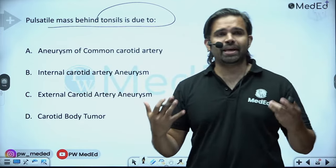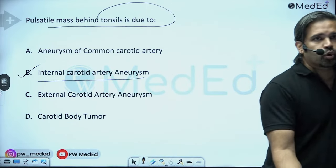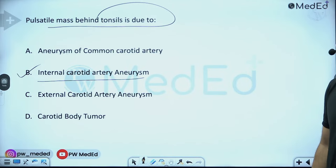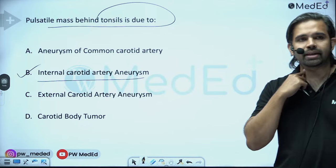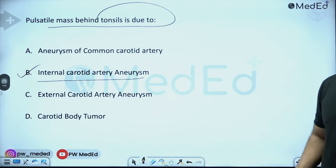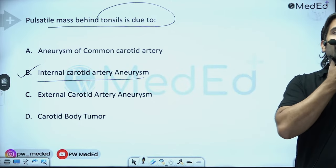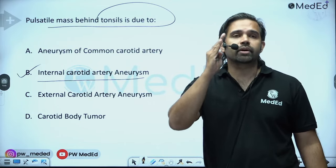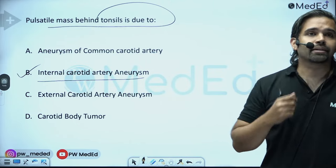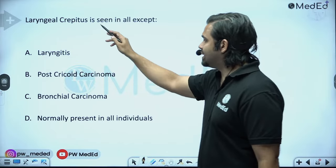A pulsatile mass behind the tonsil is due to an internal carotid artery aneurysm. The internal carotid artery runs directly behind the tonsil. Common carotid artery is much lower; external carotid artery goes laterally toward the face; carotid body tumor is at the level of bifurcation, which is also lower. At the tonsillar level, it is the internal carotid artery that is relevant anatomically.